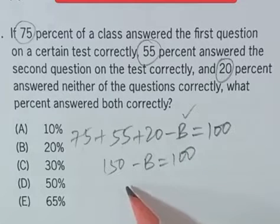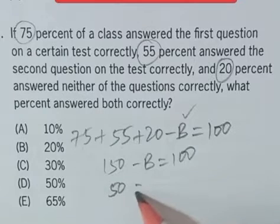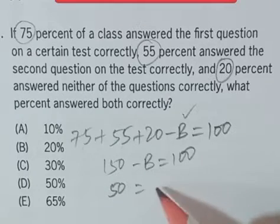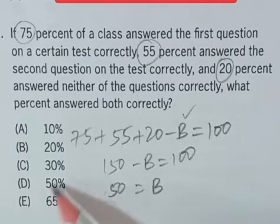This 100 will go there as minus 100. So 150 minus 100 is 50, and minus B will go here as plus B. So that's our answer, 50%.